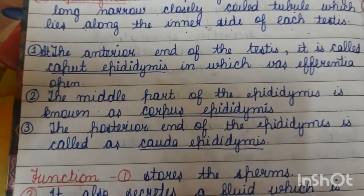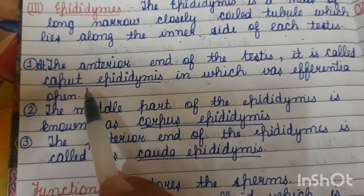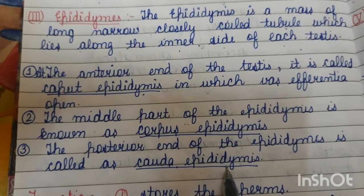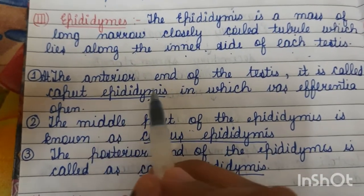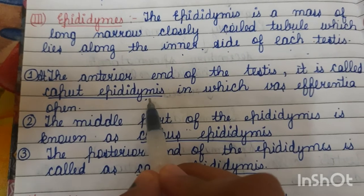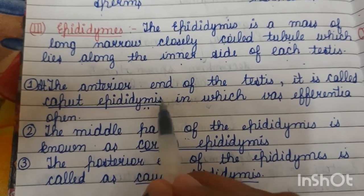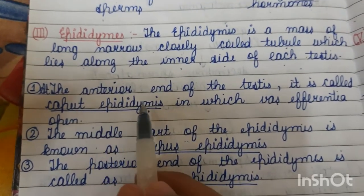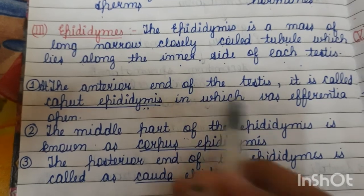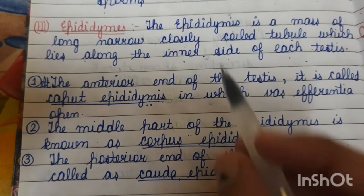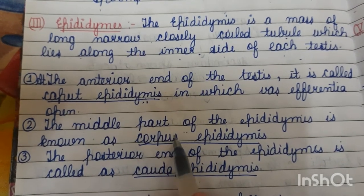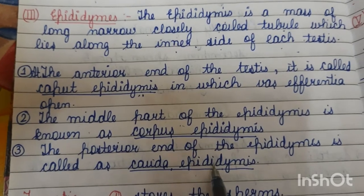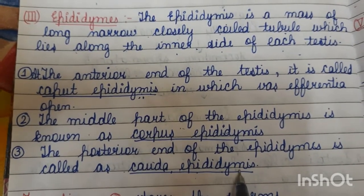The epididymis has three parts. The first part is the caput epididymis, which is the anterior part. The second is the corpus epididymis, which is the middle part. And the last is the cauda epididymis, which is the posterior part.